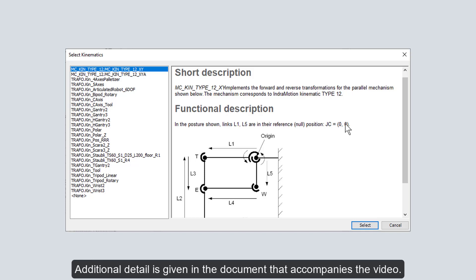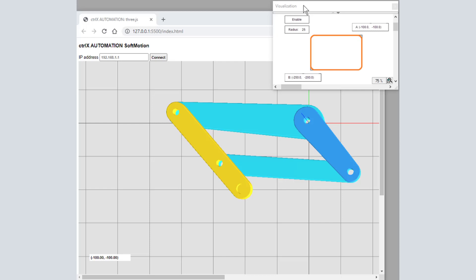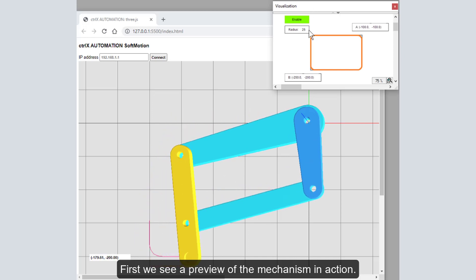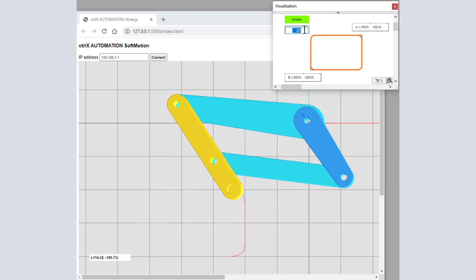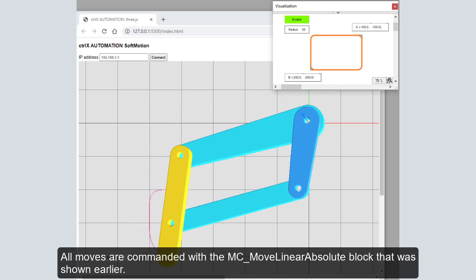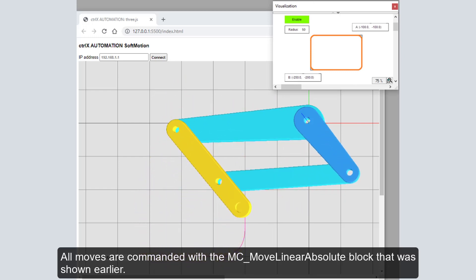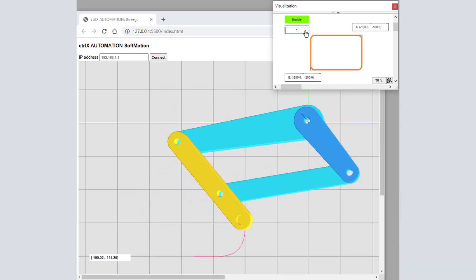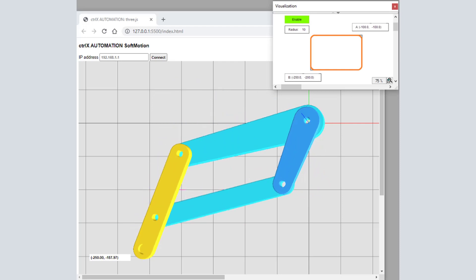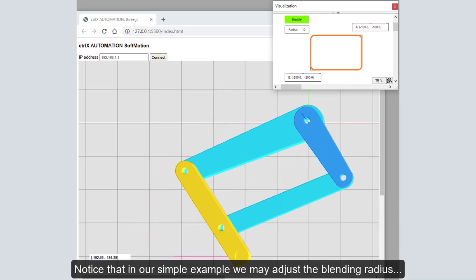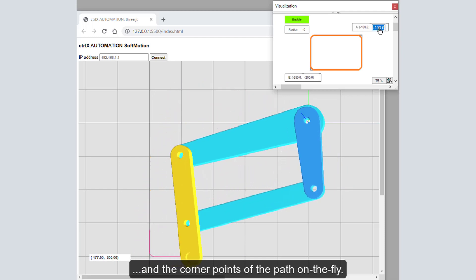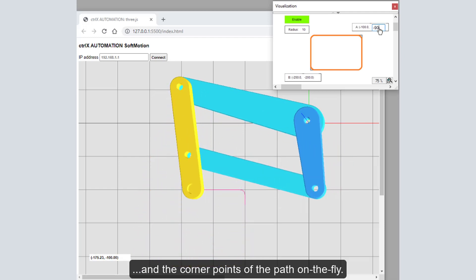Additional detail is given in the document that accompanies the video. First we see a preview of the mechanism in action. All moves are commanded with the MC move linear absolute block that was shown earlier. Notice that in our simple example, we can adjust the blending radius and the corner points of the path on the fly.